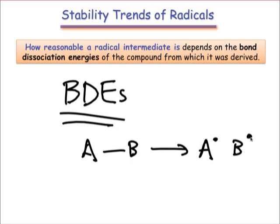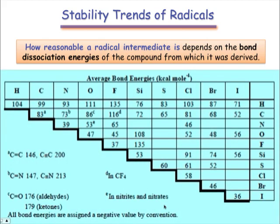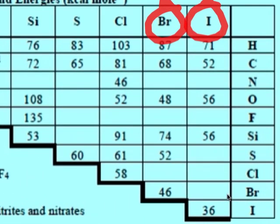A lower bond dissociation energy indicates more favorable homolytic cleavage. In general, larger, more diffuse atoms exhibit lower BDEs than the smaller second-row atoms. Thus, larger atoms such as the halogens and silicon generate radicals more easily than second-row atoms. If you take a look at the table shown here, you'll notice that many of the bonds that have been used to generate radicals historically, such as Br-Br and I-I, have notably low bond dissociation energies.